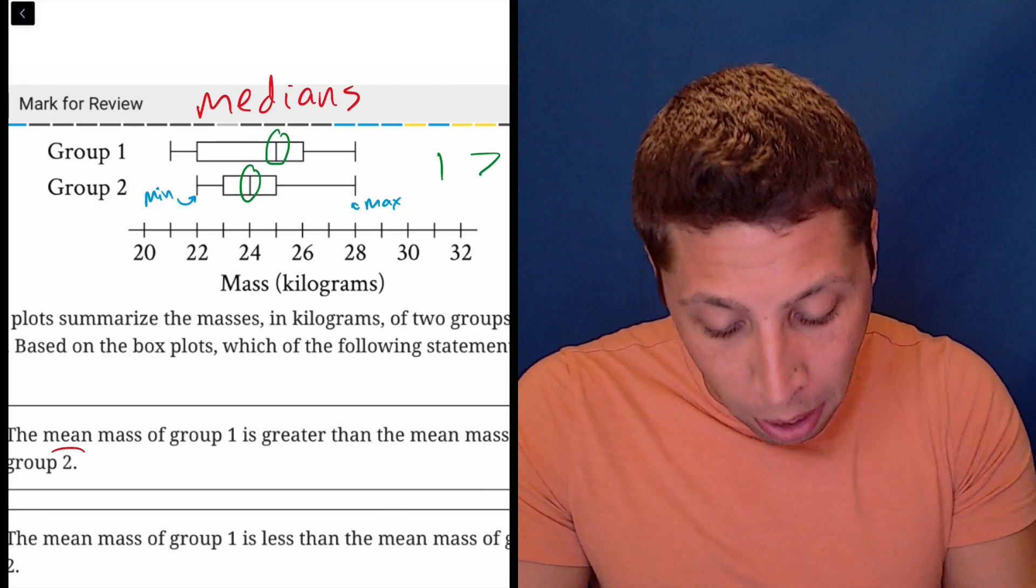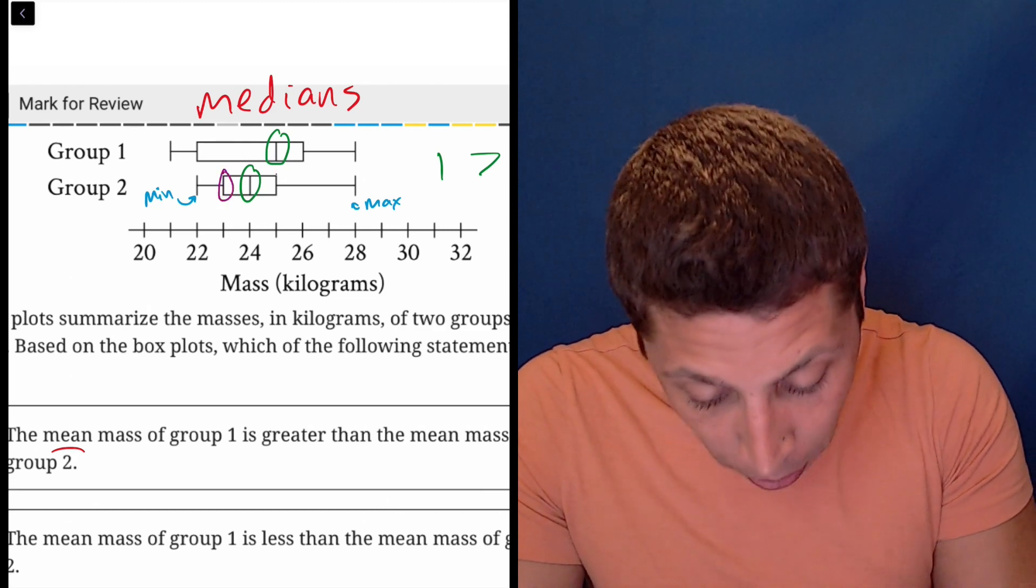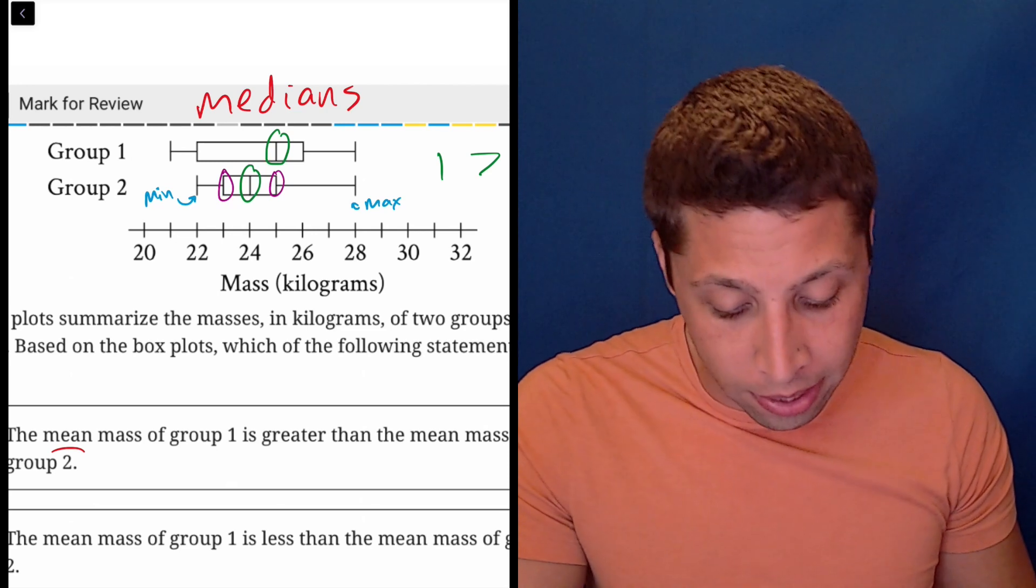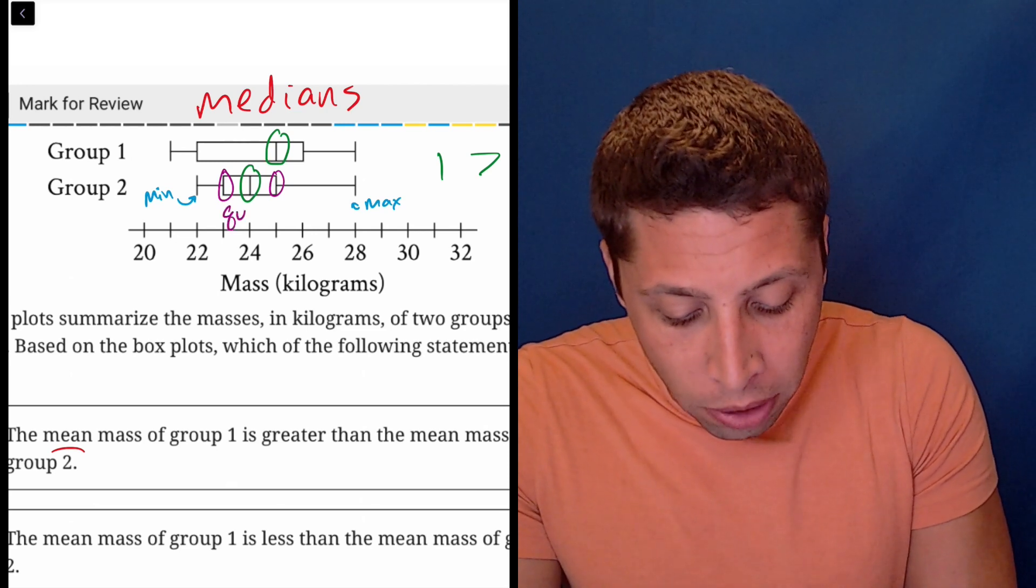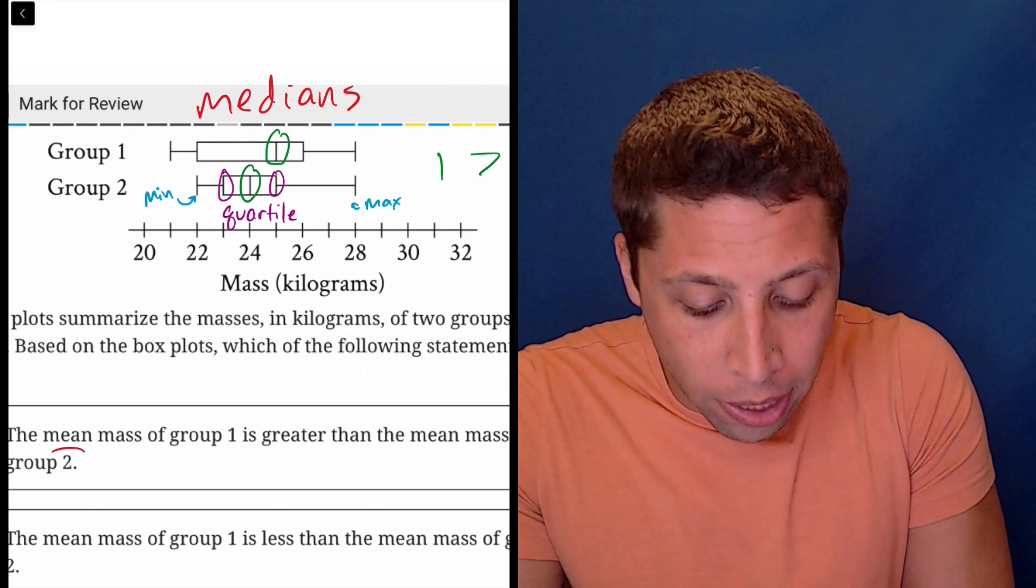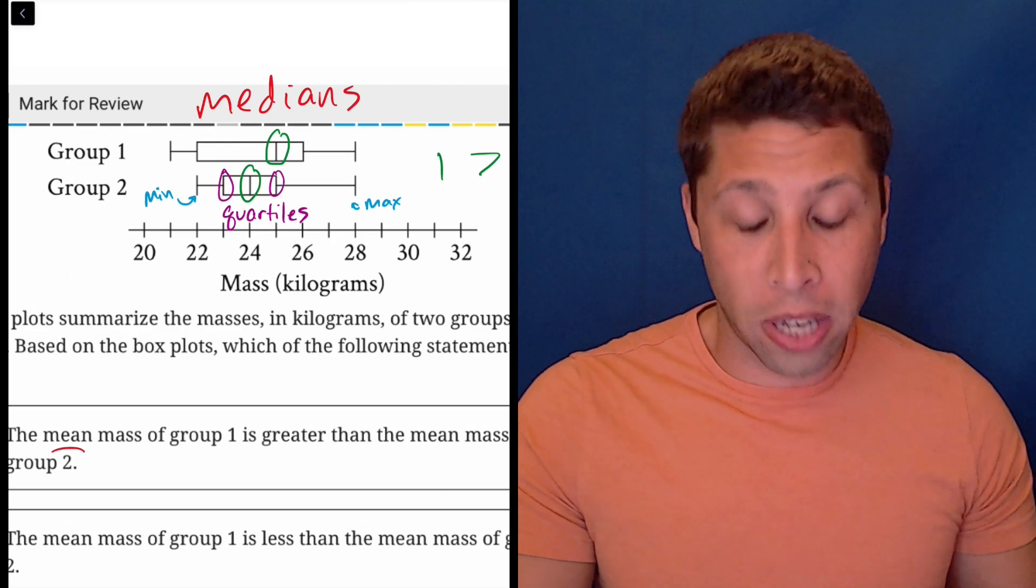The big problem for most people comes from this part, the ends of the boxes. These are usually referred to as the upper and lower quartiles or the first and third quartiles.